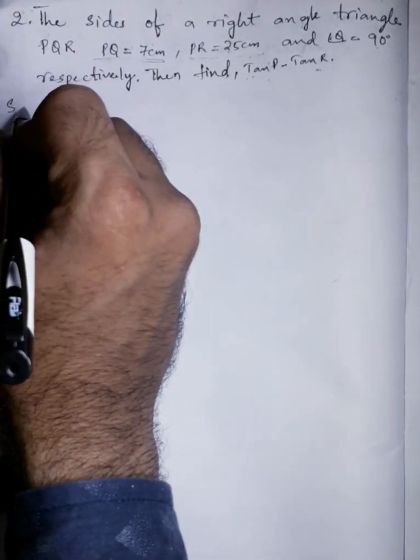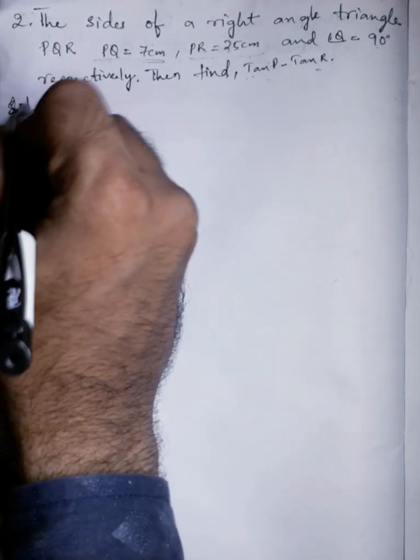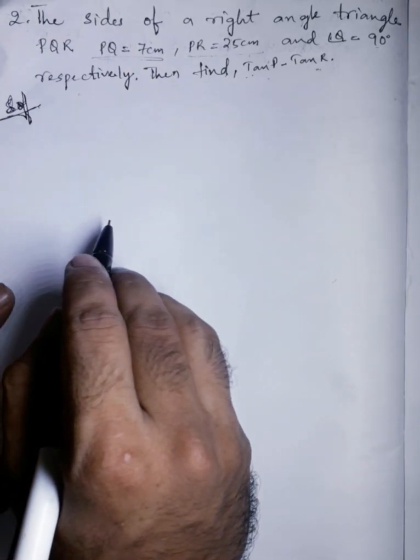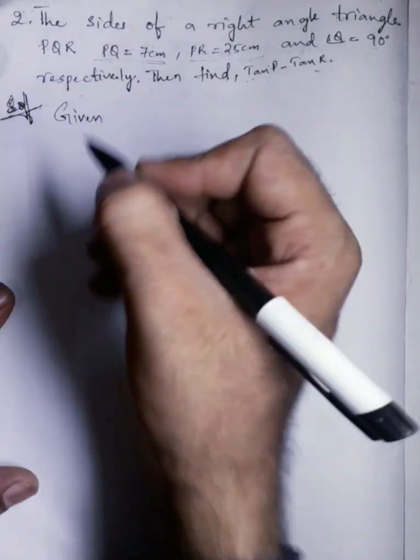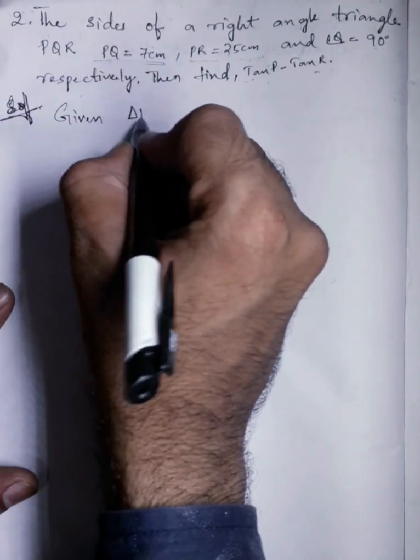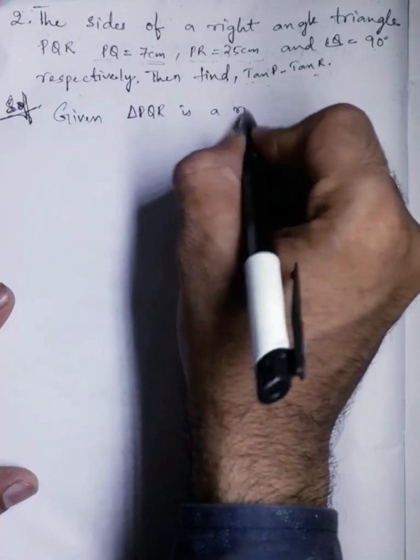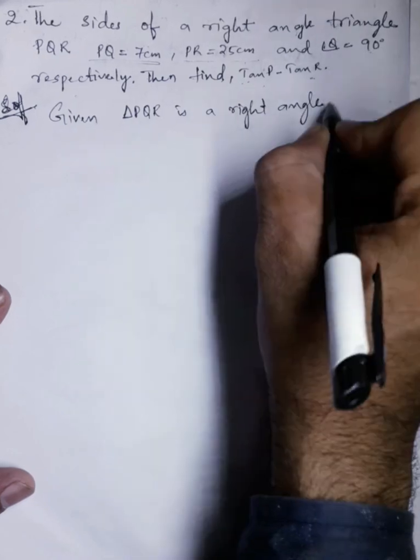Let us start solution. In solution, we are going to write what is given first. So what is given, given triangle PQR is a right angle triangle.